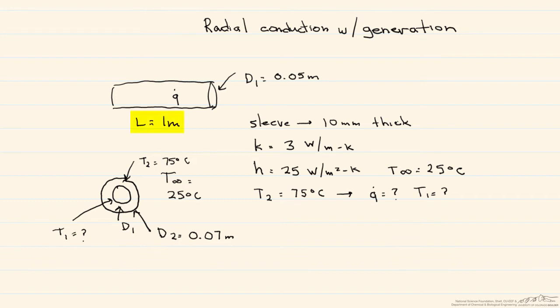Its length is one meter, and it has a diameter, that I'll call D1, that's equal to 50 millimeters. This rod experiences volumetric generation, that we'll call Q-dot, and it's covered by a 10 millimeter thick sleeve.